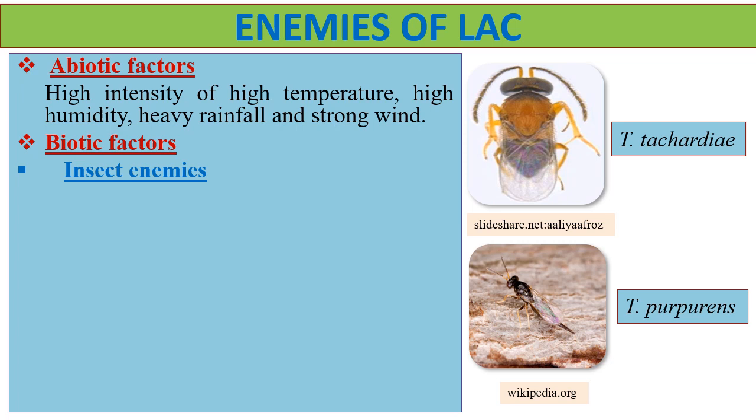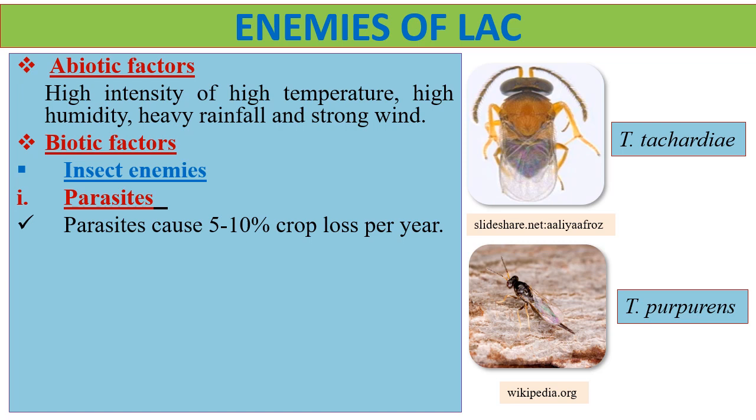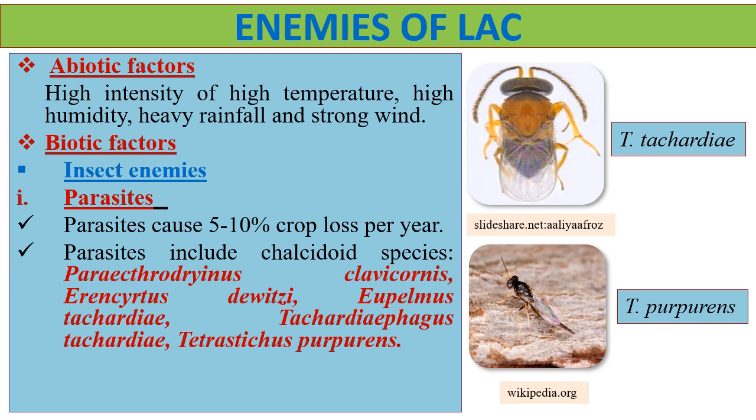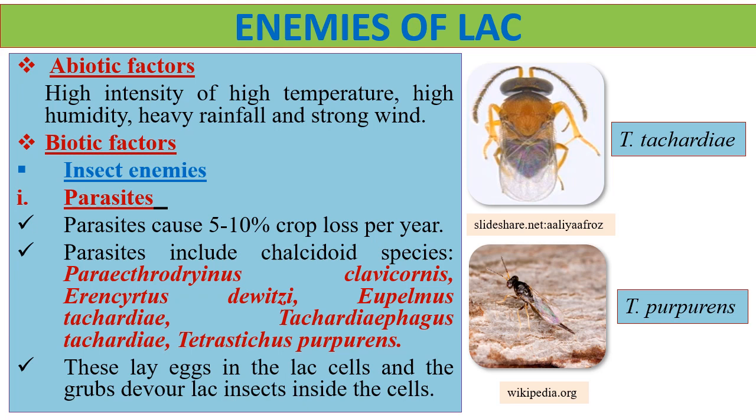Parasites cause about 5 to 10% crop loss per year. These include chalcidoid species such as Paractrodrinus clavicornis, Irancirtis duetze, Eupelmus stachardii, Tachardifagus stachardii and Tachardiscus purpureus. These parasites lay eggs in the lac cells and the larvae feed on lac cells inside.